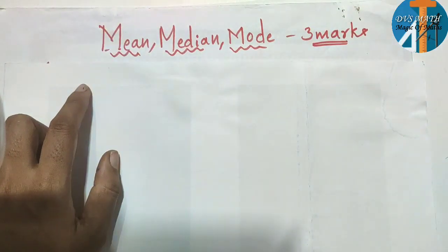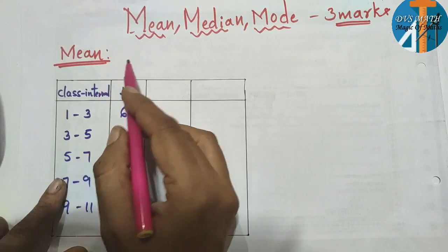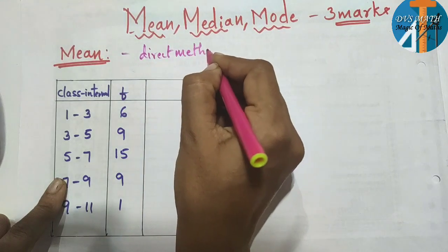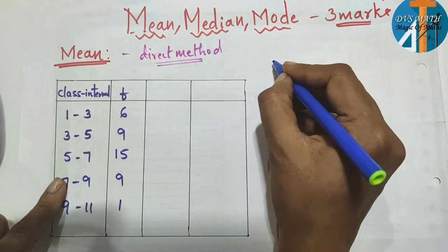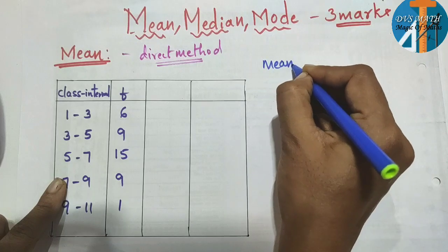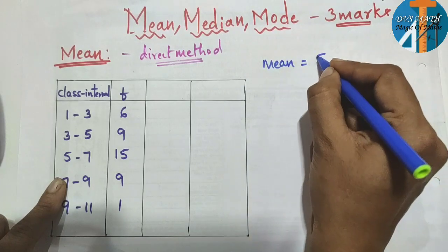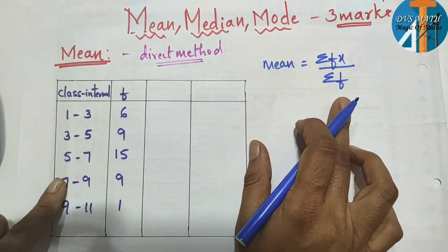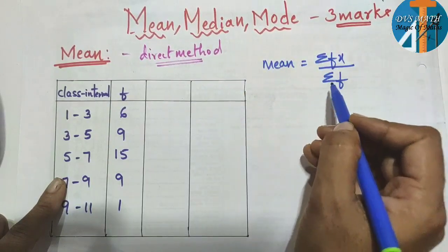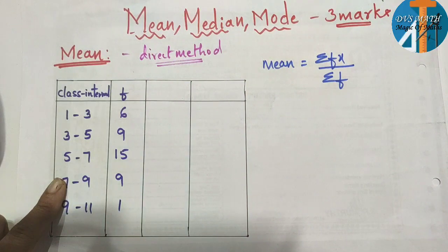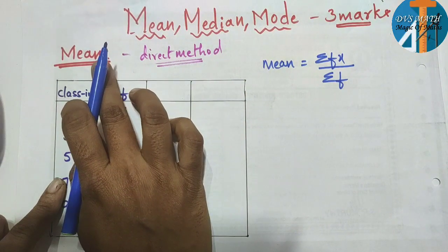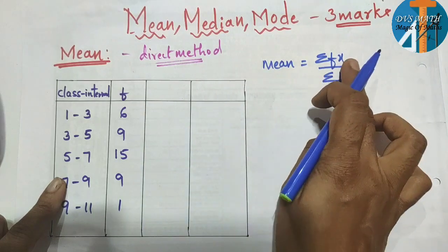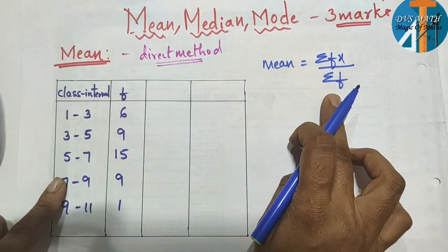First, I am going for mean using the direct method. The formula for mean by direct method is: mean = σfx / σf.